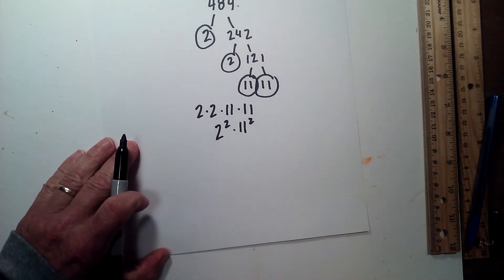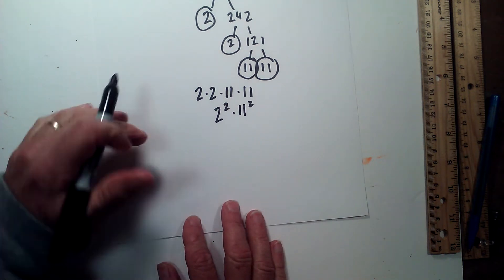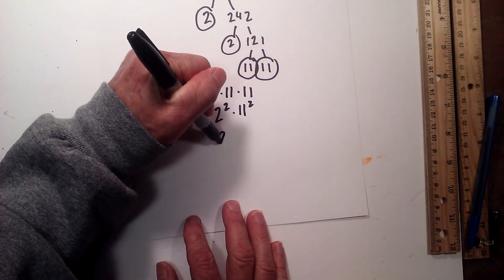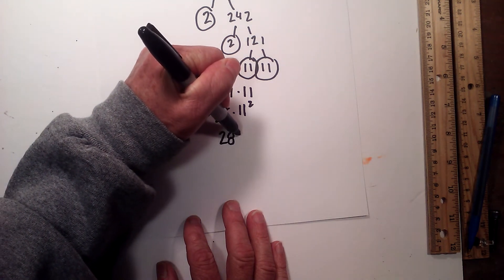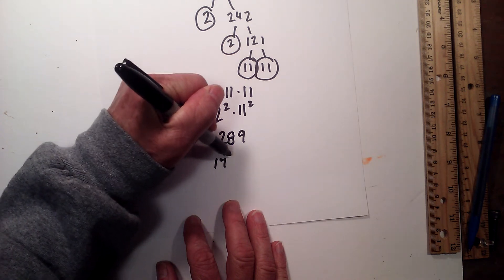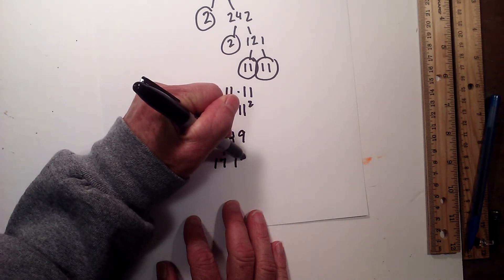Now let's go with 289. Slide this up just a little bit. So 289 is 17 times 17.